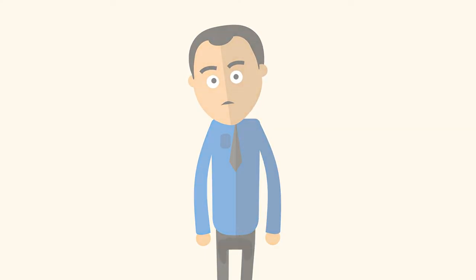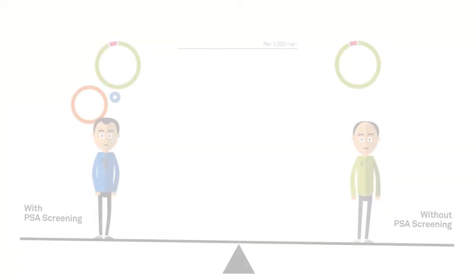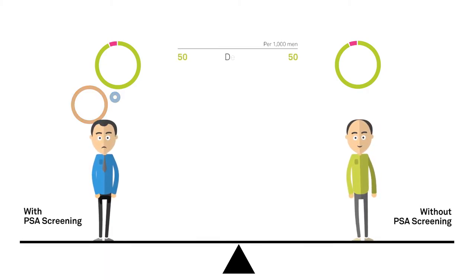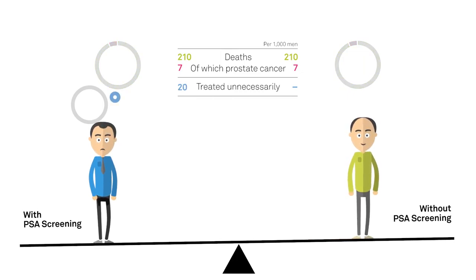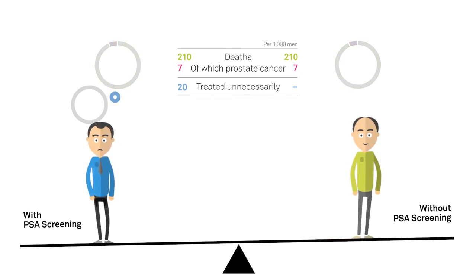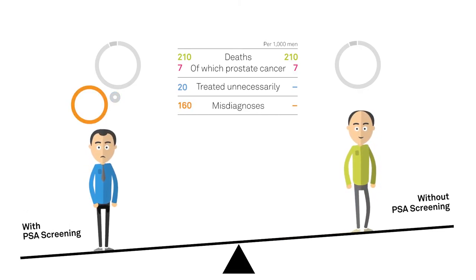In summary, the findings were therefore as follows. There was no demonstrable benefit from regular PSA testing. 7 out of 1,000 men died from prostate cancer irrespective of whether or not they underwent PSA testing. Furthermore, 20 out of 1,000 men were exposed to a significant health risk as a result of unnecessary treatment, and 160 of them had to wrongly assume that they had prostate cancer, causing them considerable emotional strain.